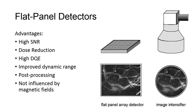Flat panel detectors also have much higher signal-to-noise ratio than image intensifiers. A post-processing technique called temporal frame averaging allows for a reduction of noise by as much as 44%. This process averages each pixel value for one or two frames prior to, and one or two frames following, a specific captured frame. Other advantages for digital flat panel detectors are contrast enhancement capabilities, high DQE (detector quantum efficiency), and improved dynamic range of the detectors.